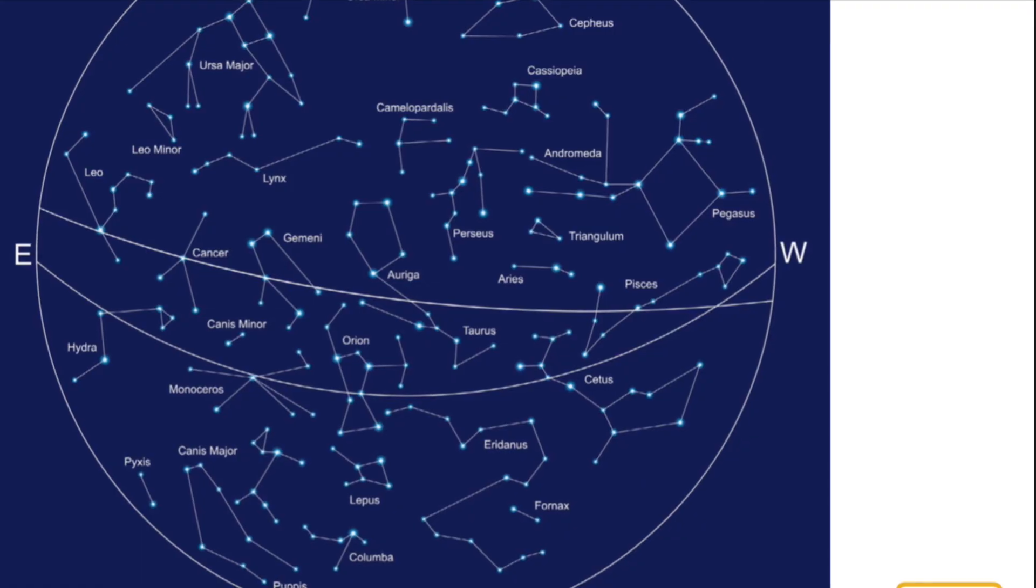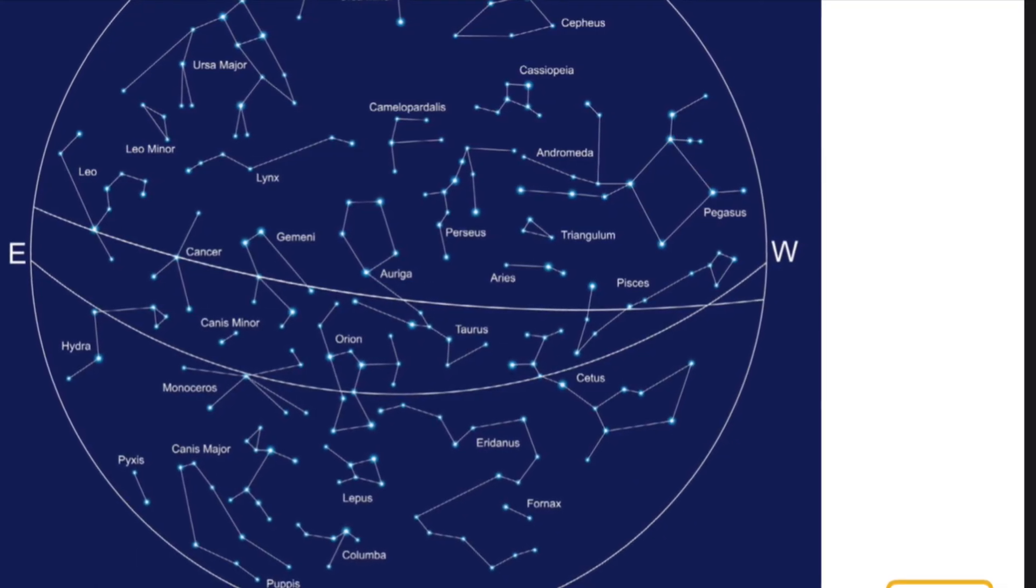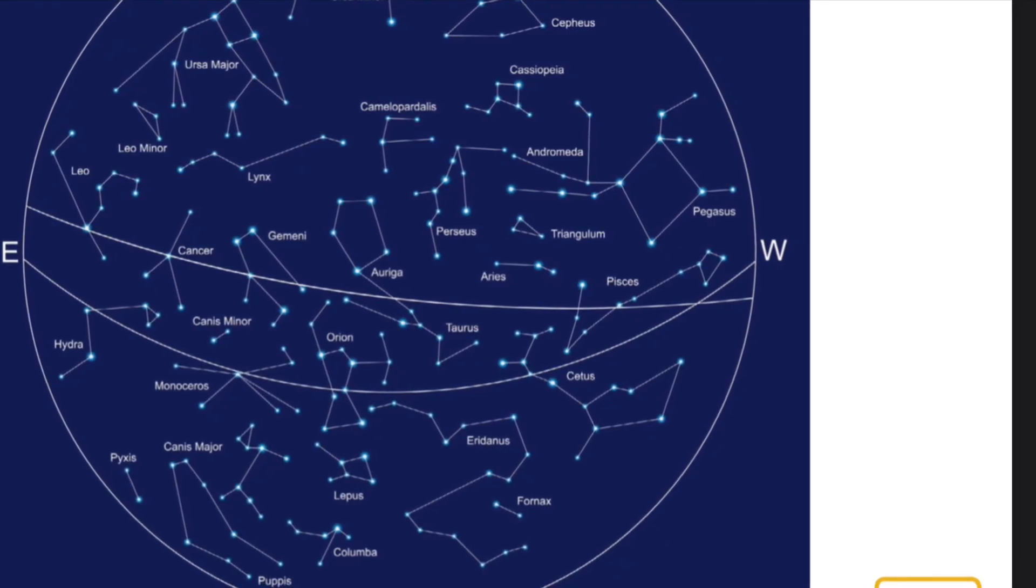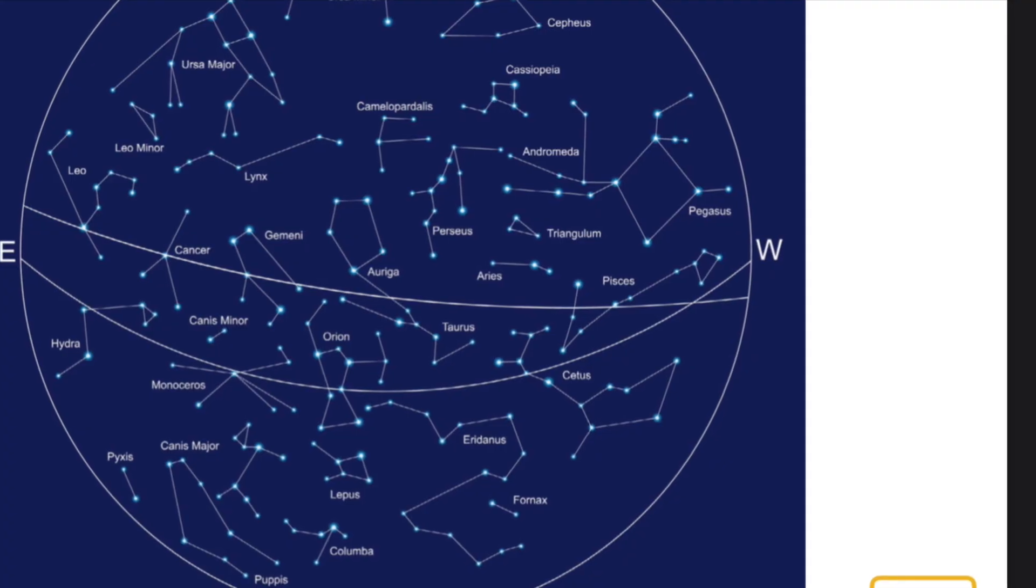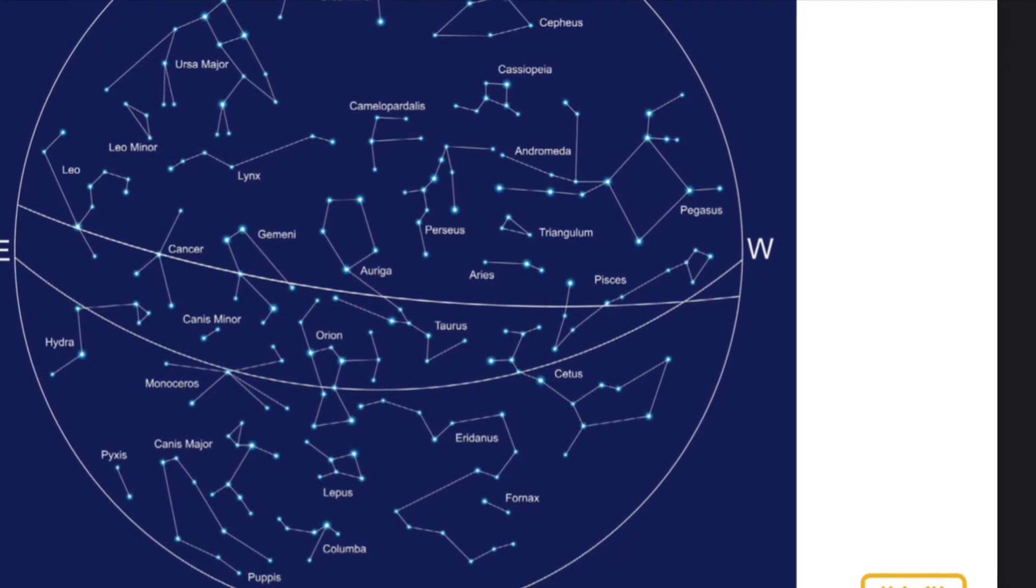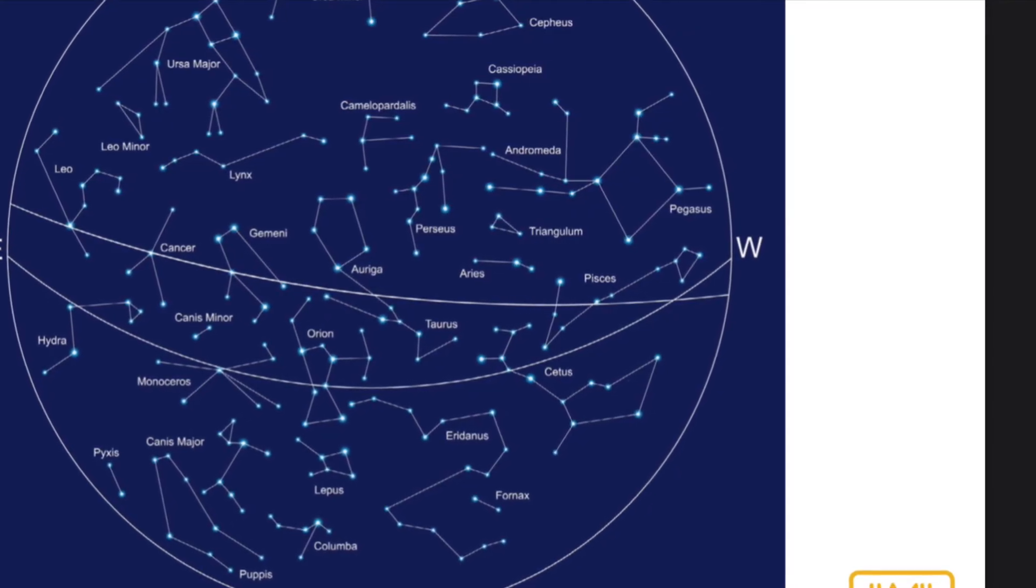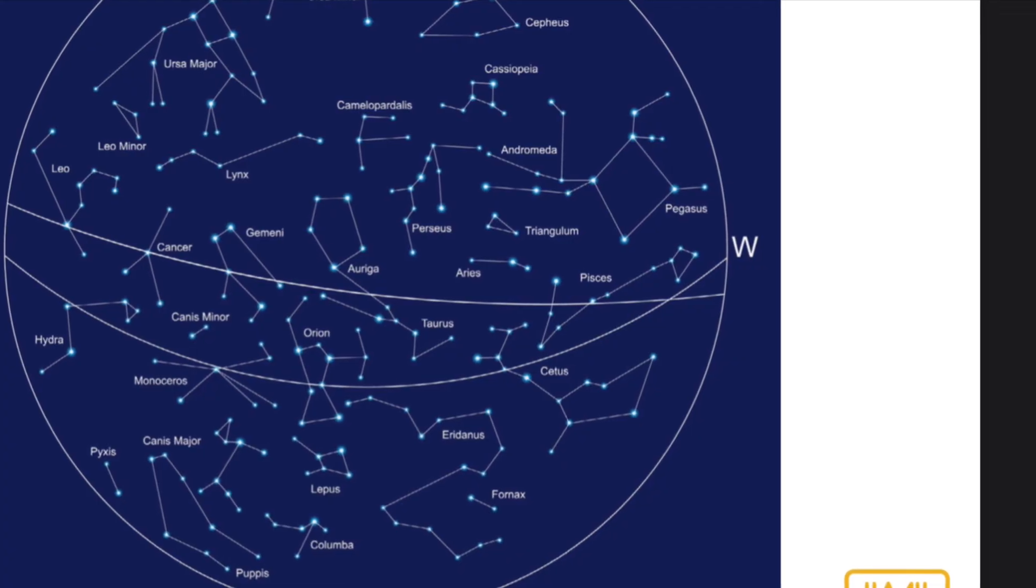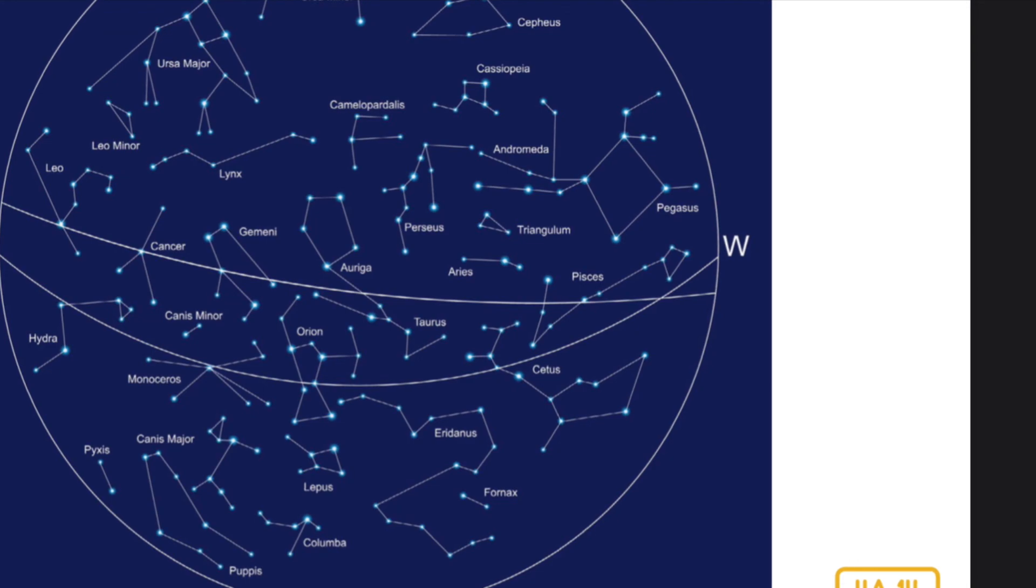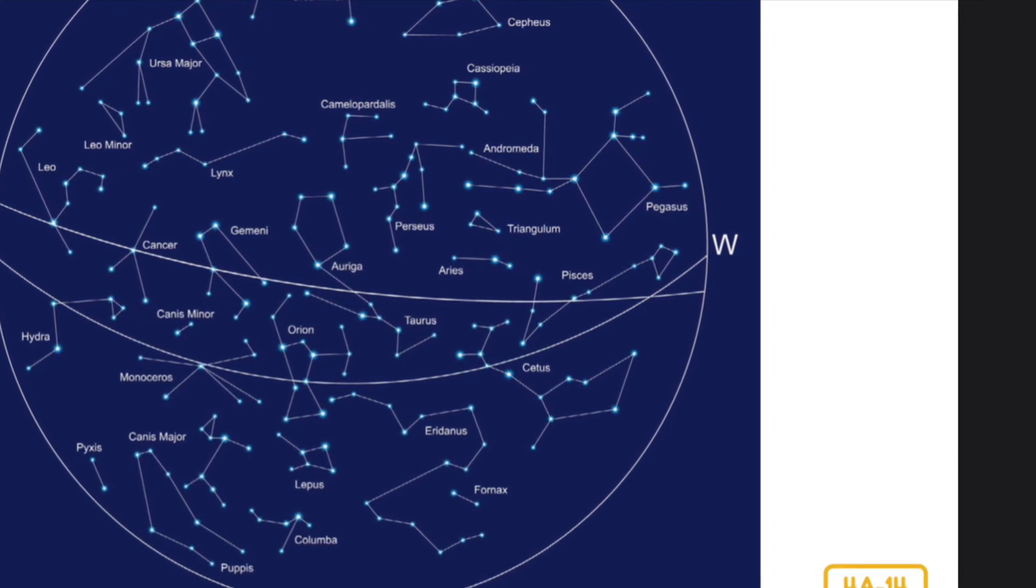Yet, even as we have gained new knowledge about outer space, our understanding of the stars is still built upon the stories and knowledge passed on by people for thousands of years. Next time you find a constellation in the sky, you will know that other stargazers have been studying and telling stories about that same group of stars for thousands and thousands of years.